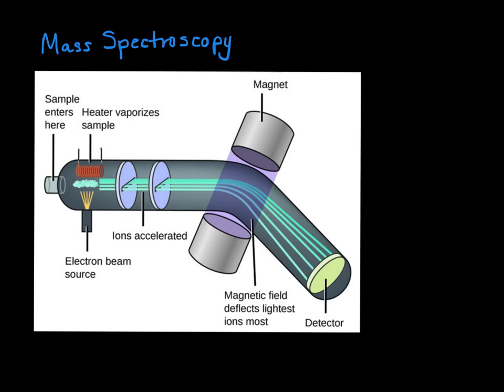An atom enters in here, and what it is is it's ionized, which means that its electron is removed, so it has a positive charge. So it's going to go through this column with a positive charge.